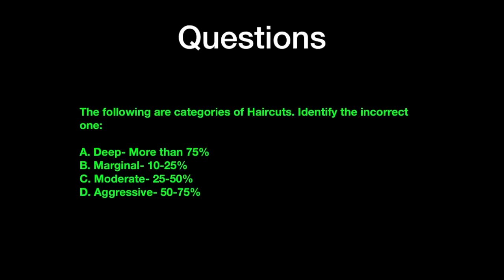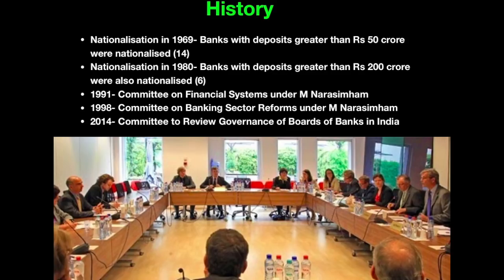The next question is: the following are categories of haircuts — identify the incorrect one. Unless you know the definition and meaning of haircuts, it is very difficult to answer this question. It is a factual question that tests your knowledge about specific facts related to haircuts. So let us start with our first slide that talks about the history of the banking system in India.